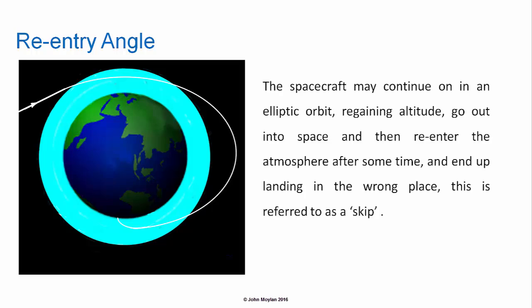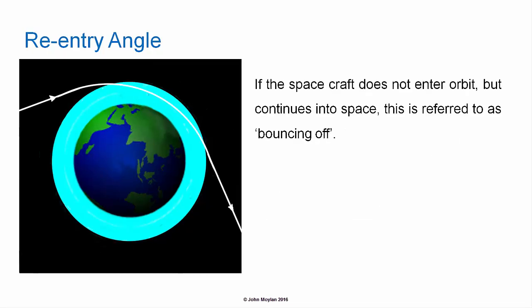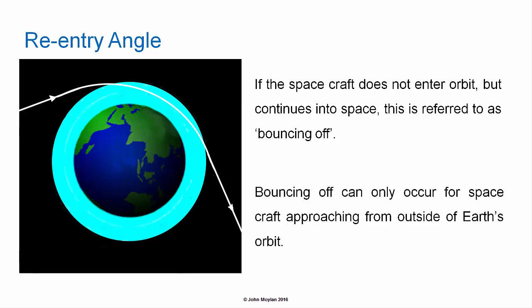The spacecraft may continue in an elliptical orbit, regain altitude, go out into space, and then re-enter the atmosphere after some time, ending up landing in the wrong place — this is called a skip. If the spacecraft does not enter orbit but continues into space, this is referred to as bouncing off. The spacecraft doesn't actually bounce off the atmosphere; it is slowed by its interaction with the atmosphere and changes direction due to earth's gravity, but in colloquial terms it's called bouncing off. Bouncing off can only occur for spacecraft approaching from outside of earth's orbit.